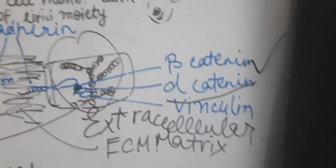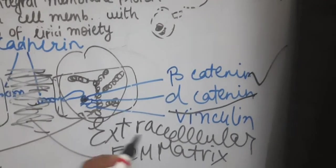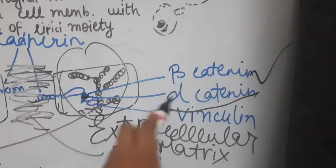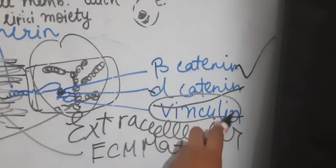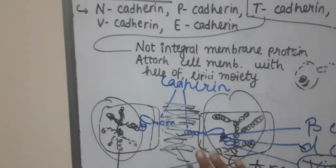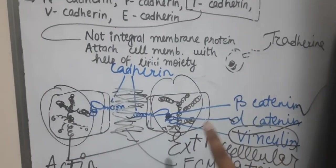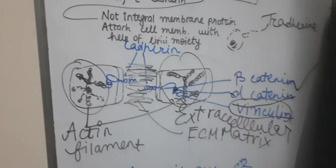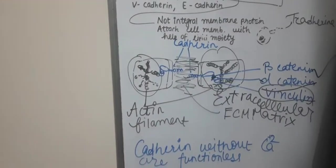Next is alpha-catenin, and what binds the actin filament with the alpha-catenin is vinculin. Understood? Starting from the cadherin: first comes the beta-catenin, next comes the alpha-catenin, next comes the vinculin, and we are all done.